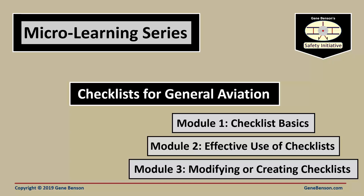Welcome to our microlearning course about checklists in general aviation. The course consists of three short modules. This first module is an introduction to checklists and includes an interesting story about how aviation checklists came to be. Module 2 deals with the effective use of checklists — which checklists are needed and what to do if you are interrupted while running a checklist. Module 3 concerns modifying or creating checklists to make them right for the individual and the operation. It is not essential, but I recommend that you view the modules in sequence.